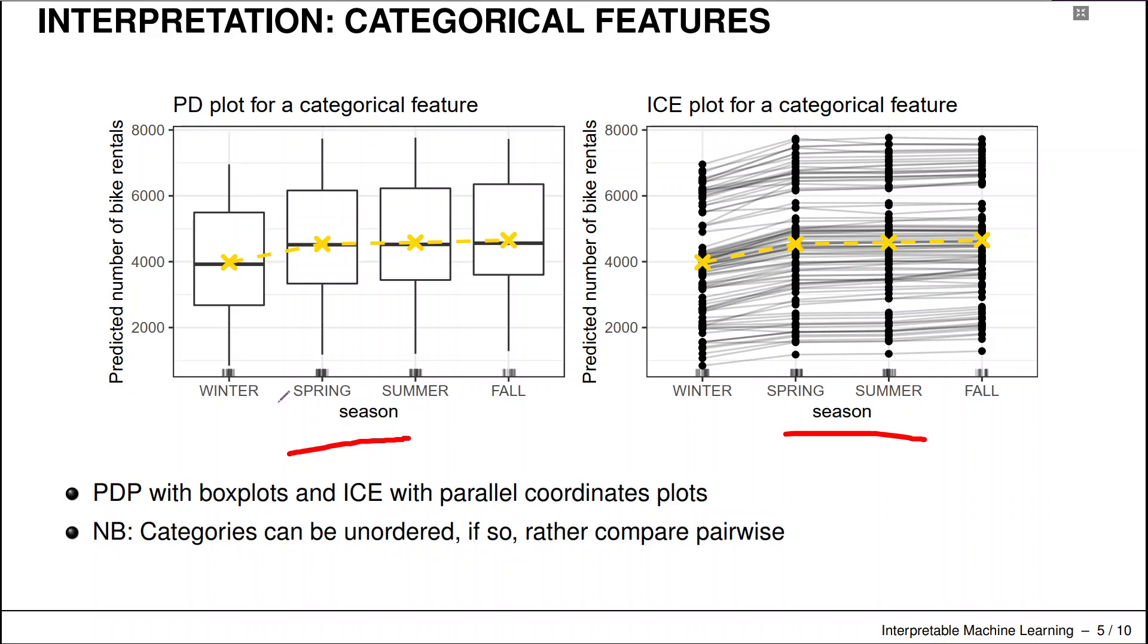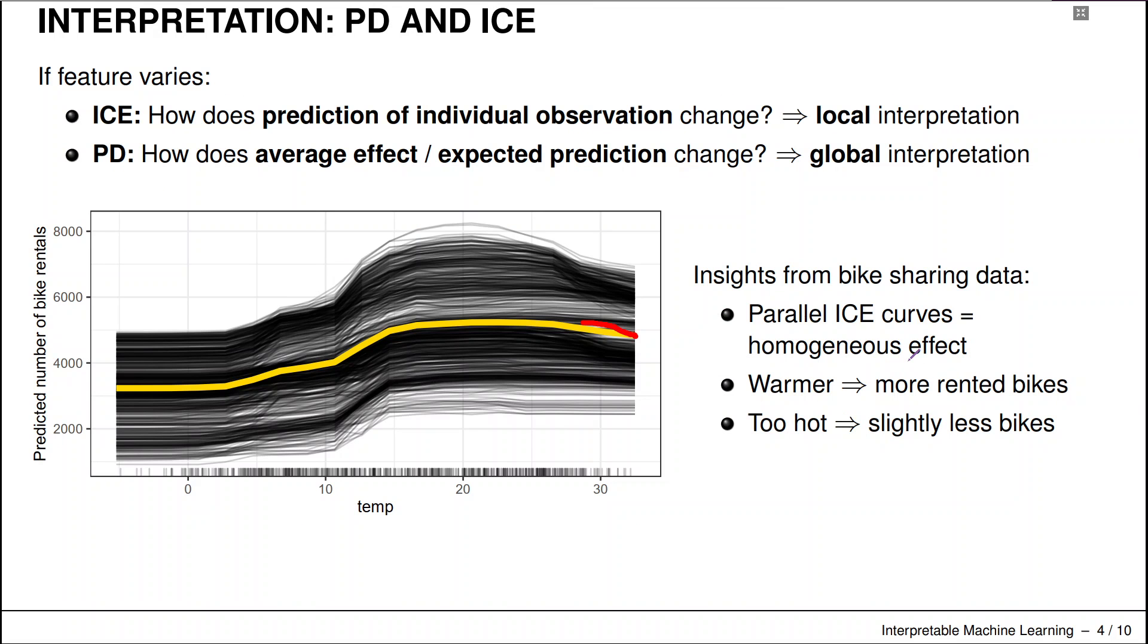So we picked here for the bike sharing data set this season feature, which has obviously the seasons are ordered from winter, spring to summer and fall. And we can now either plot the variance that goes on in the background of the PDP value through the ICE curve values as a box plot, or we can have these parallel coordinate plots, which now really look similar as the PDP plots before for numerical features.